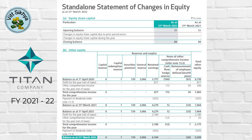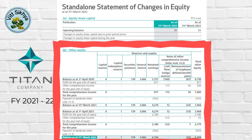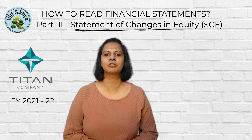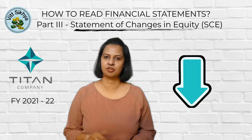It's split into two parts. Number one, changes in equity due to capital transactions — this section shows how the company's equity changed due to transactions like issuing new shares, repurchasing shares and paying dividends. Number two, changes in equity due to other comprehensive income — this part covers items like foreign exchange gains and losses and changes in the fair value of investments which affect the company's equity. For your reference, the link to the financial statements of Titan Limited, financial year 2021-22 is mentioned in the description below.